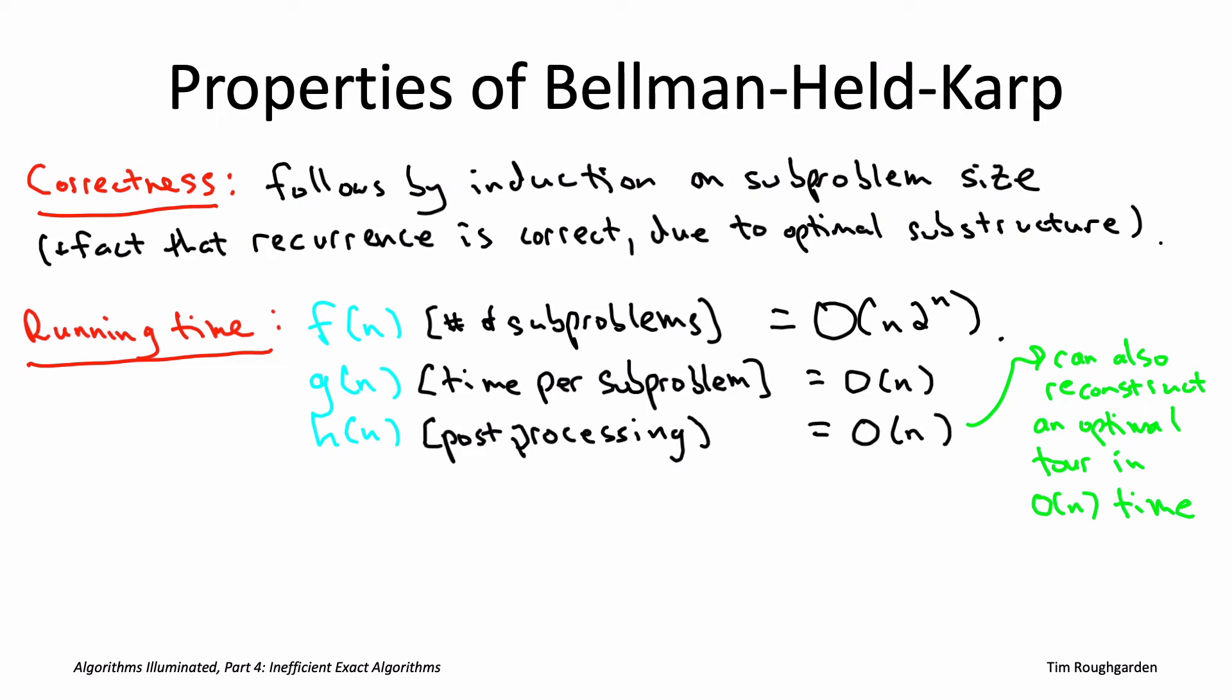So remember the formula for the running time bound of dynamic programming algorithm, it's just f times g plus h, which in this case evaluates to n squared times two to the n. All right, so one piece of fine print in this running time analysis, I am assuming that you can generate the number of subsets capital S with a given size little s in time proportional to the number of such subsets. If you think about it, the number of such subsets is exactly n minus one, choose s minus one, because you know that the vertex one has to be in there. So this can be done, I encourage you to think about how you might do it in a concrete implementation. You can use recursive enumeration, or if you really want to venture out into the weeds, you can look up something known as Gospers hack.